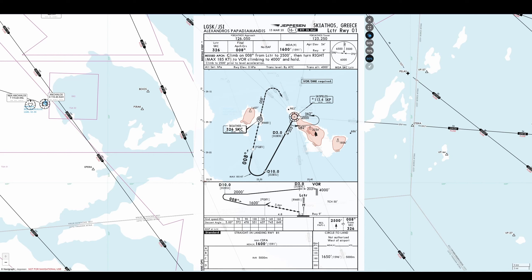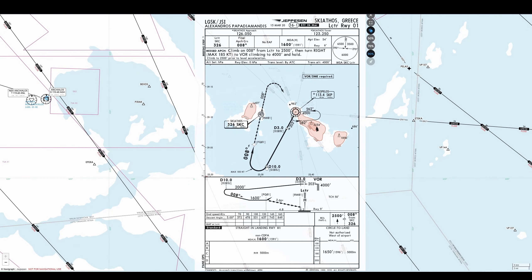Our first outbound point from the SKP VOR is D203C, which is at the 203 radial from the SKP VOR. Then after that we will be at D203J, which is at a DME of 10 nautical miles from Skopelos — D203C is at 3 nautical miles. Once we hit D203J, or 10 nautical miles from SKP at 203 outbound radial, we'll be turning right at a radial of 008. The max speed at that point will have to be 185 knots.